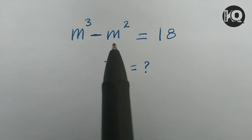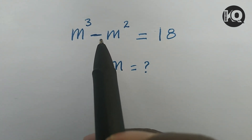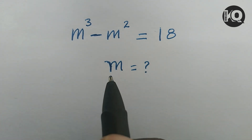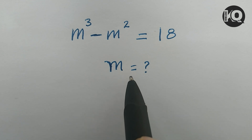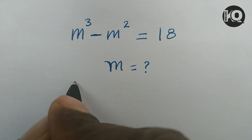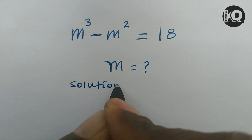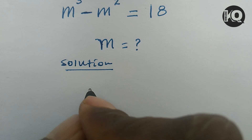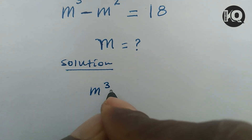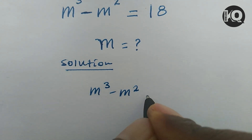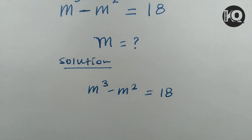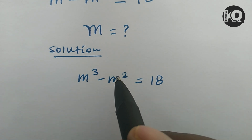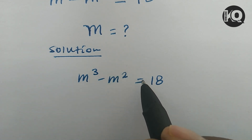Hello, welcome. To solve this equation: m cubed minus m squared equals 18, find all possible values of m. To solve this problem, first we have to recall the equation which is m cubed minus m squared equals 18.